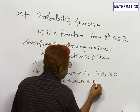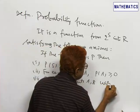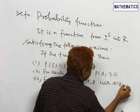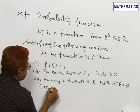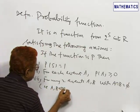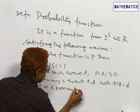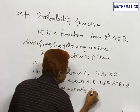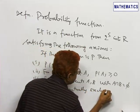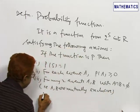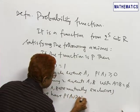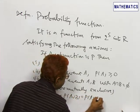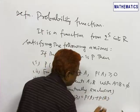A, B with A intersection B empty, that is A, B are mutually exclusive, we have P(A union B) = P(A) + P(B).